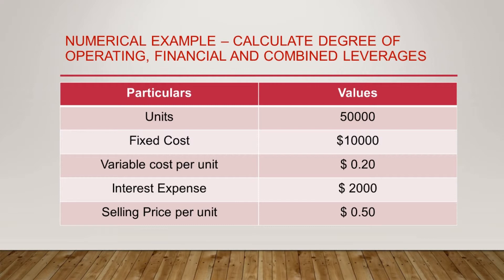Now we would try to understand how to calculate the Degree of Operating, Financial, and Combined Leverage with the help of a few examples. In the given data, units are the products being manufactured — suppose 50,000 units are being manufactured, having a fixed cost of $10,000. The variable cost is given per unit at $0.20, the interest expense is $2,000, and the selling price per unit is $0.50. We will now see how to move forward to calculate all the leverages.